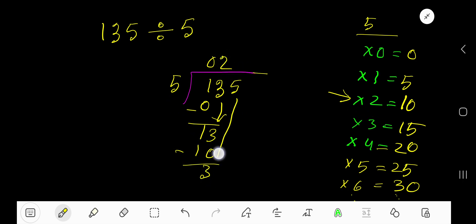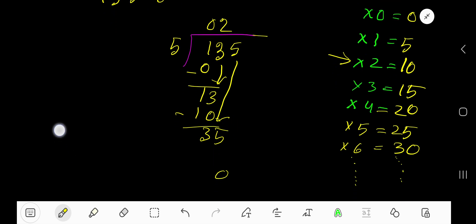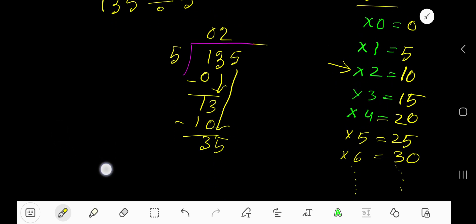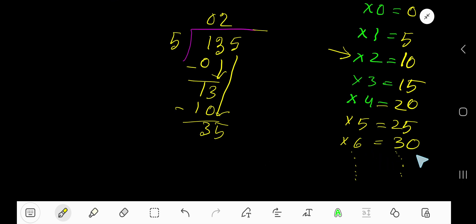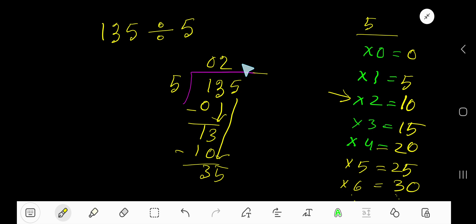Bring down the 5. 5 goes into 35 how many times? 5 times 6 is 30, 5 times 7 is 35. So 5 goes into 35 seven times, right? 7 times 5 is 35.